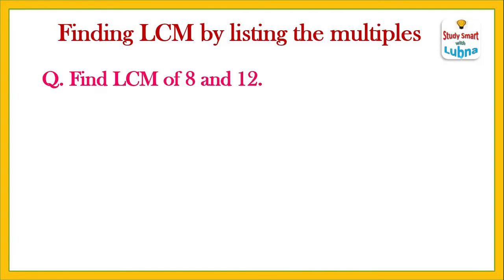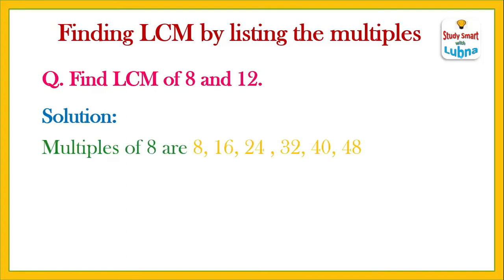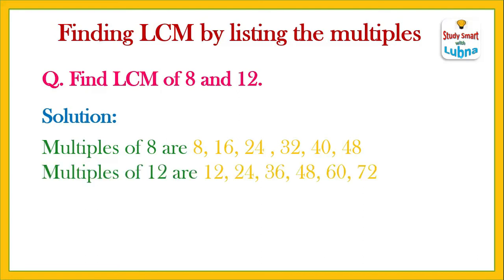Find the LCM of 8 and 12. First of all, we'll find out the multiples of 8 and 12. Multiples of 8 are: 8, 16, 24, 32, 40, and 48. The first six multiples of 12 are: 12, 24, 36, 48, 60, and 72. You could also find more than six multiples — it's up to you.